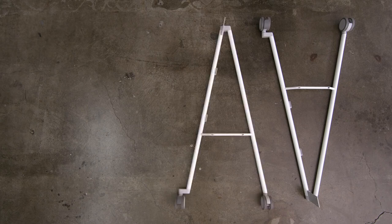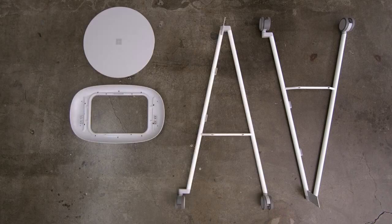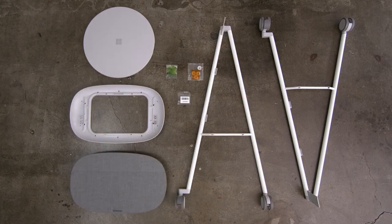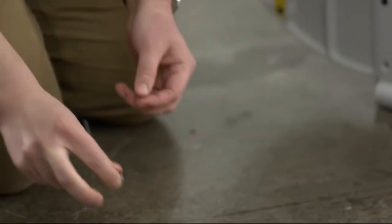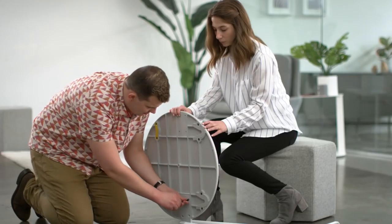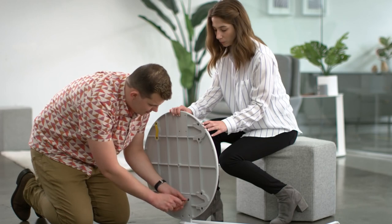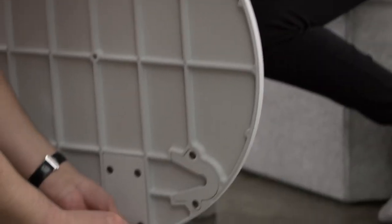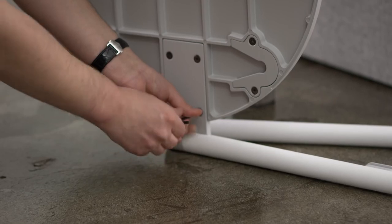To start assembling the Steelcase Rome mobile stand, begin by removing all the components from the box. Begin by opening the green bag and then attach the mounting plate to the first leg. Ensure that you attach the bracket on the leg to the correct side of the mounting plate.